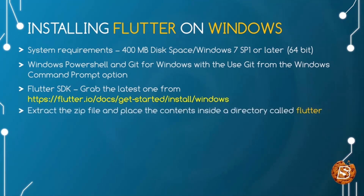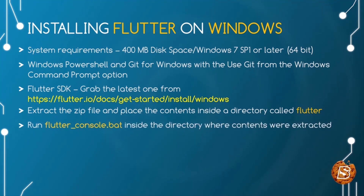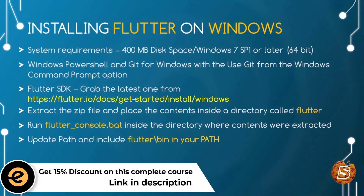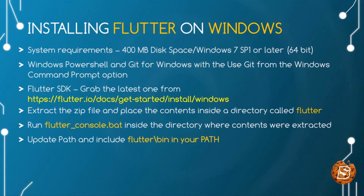Once you have downloaded the zip file, extract it inside a directory — let's call it Flutter. In that directory, you will find a batch file called flutter_console.bat. Just double-click on it to execute it and once done, you will be able to run Flutter from your command prompt. You can also update the Windows PATH variable to include flutter/bin so that you can execute Flutter from any directory. After that, you need to run flutter doctor to ensure everything is properly set up.